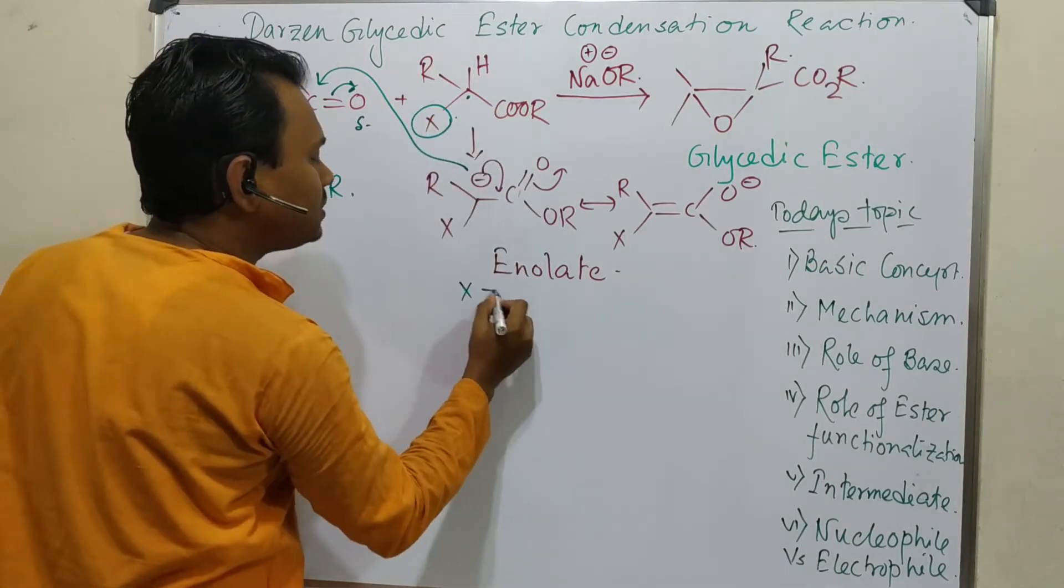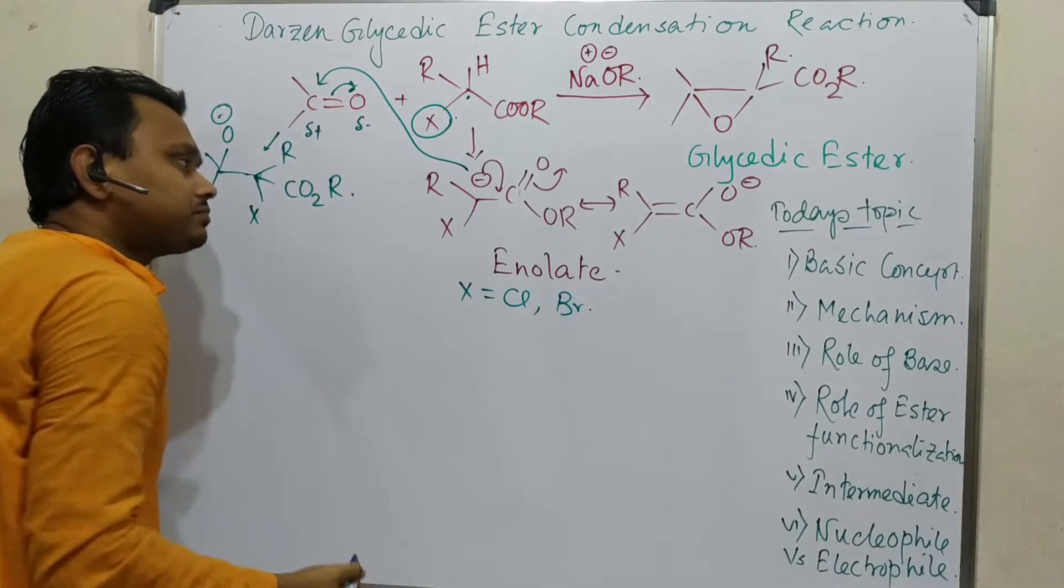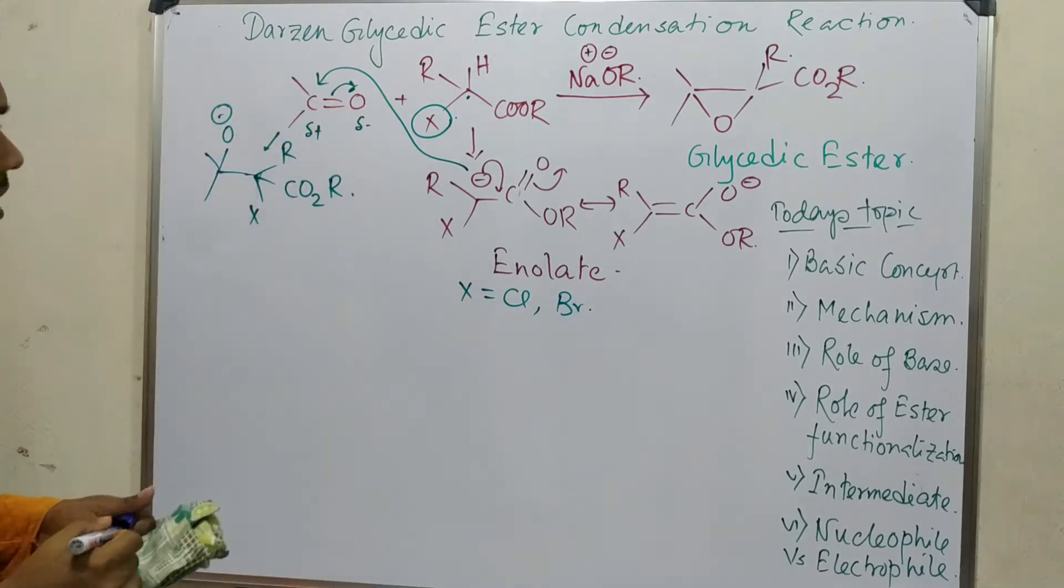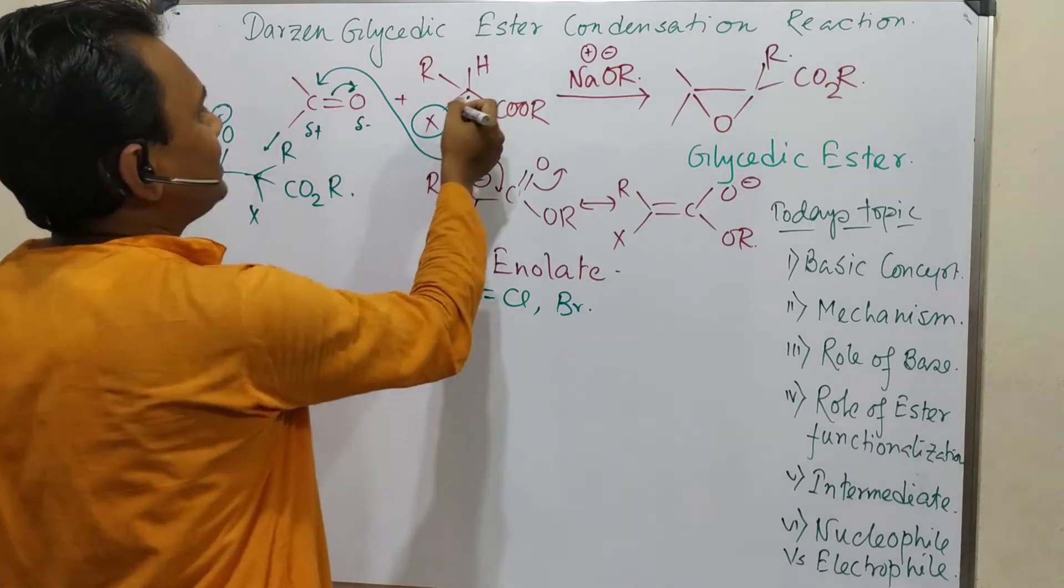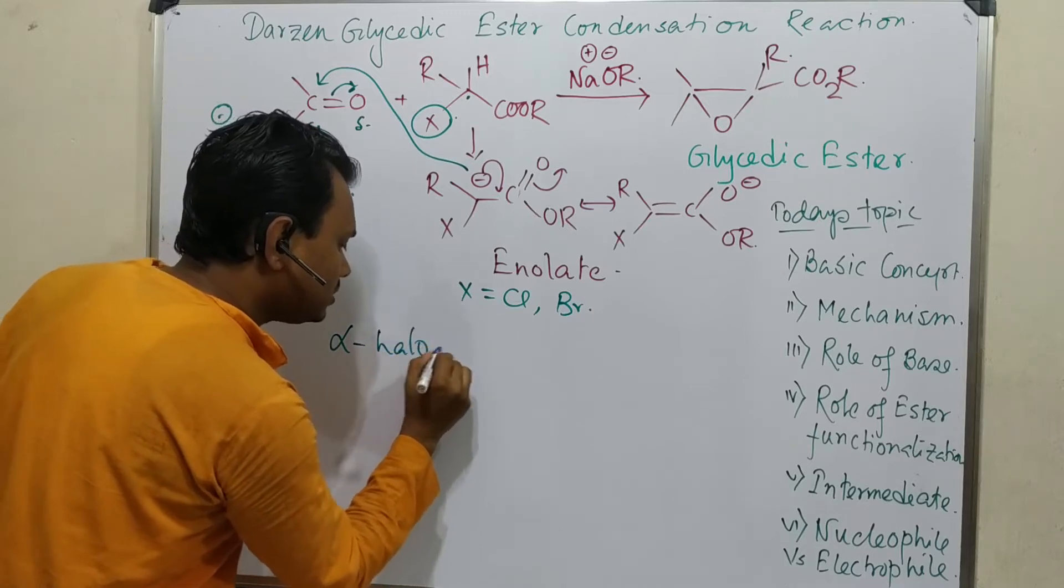This X could be Cl or Br, meaning halogen. And one question you may think: there is one alpha-halo. This is actually an alpha-halo carbonyl. What do I mean?